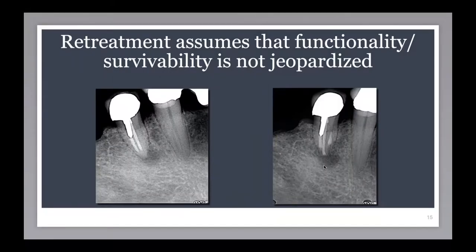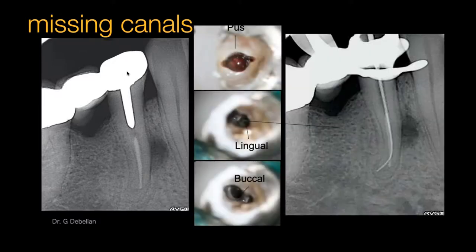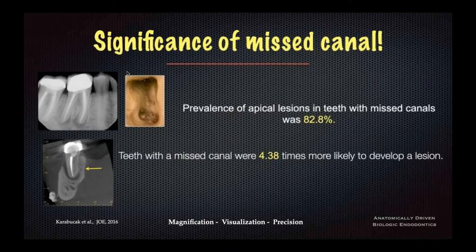In addition, if the retreatment is going to affect the survivability and restorability of the tooth, then we may do apical surgery. In one case, it was evaluated that by taking the post and crown off and finding the missed canal, the restorability of the tooth would be jeopardized, so this was treated with an apical approach. In another case with a fixed unit bridge, they felt they could do a retreatment through the bridge and post without jeopardizing the restoration — they found the extra canal, treated it, and success was achieved.